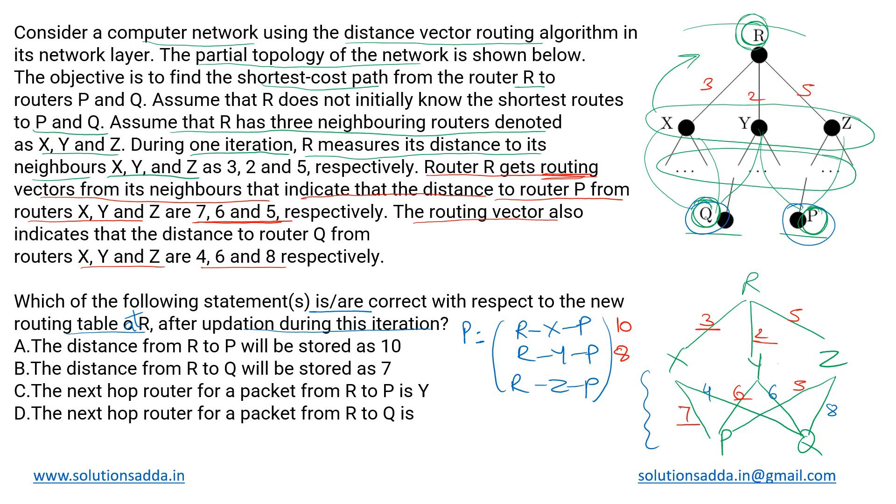So 5 and 5 is 10, and it will choose the minimum of these, that is 8. So now the distance R to P has been resolved as 8.